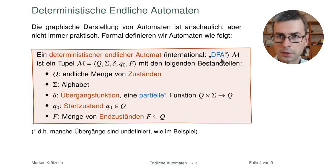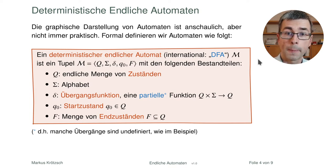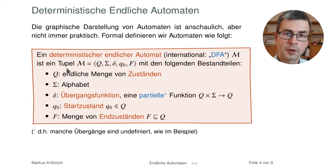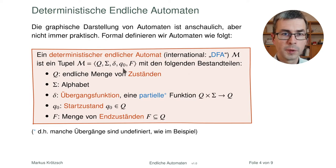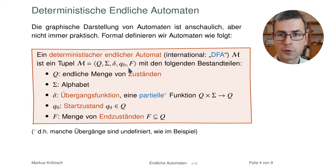Ein deterministischer endlicher Automat — international auch DFA für 'deterministic finite automaton', im Deutschen auch DEA — wird, wie bei Grammatiken schon kennengelernt, durch ein Tupel dargestellt. Er hat verschiedene Bestimmungsstücke, die wir der Reihe nach auflisten. Die Reihenfolge muss immer eingehalten werden, damit das Tupel genau der Definition entspricht.